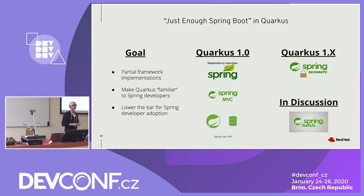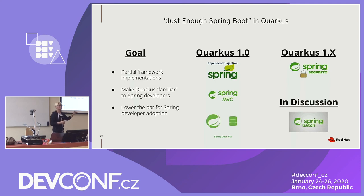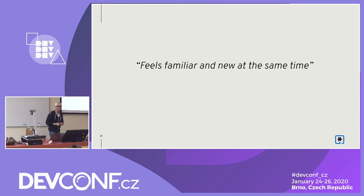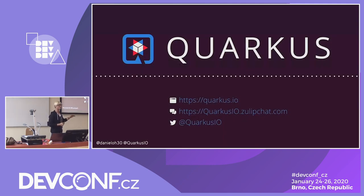The reason we don't need to migrate: you can just run the Quarkus application with Spring Boot annotations, syntax, etc. Developers can run their Spring Boot application without migration on Quarkus if they're using this supported ecosystem — and still get small memory footprint and millisecond startup times without any code changes. The goal is to feel familiar and feel new at the same time — that is the main goal of Quarkus.